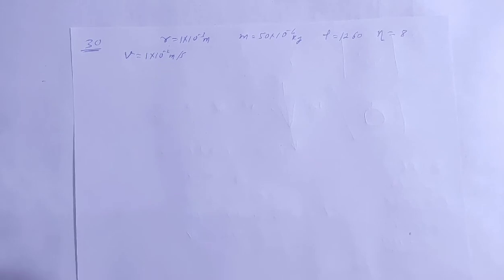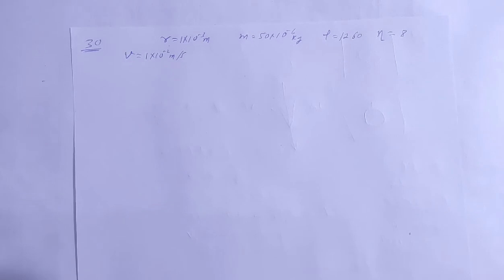A metal sphere of radius 1 mm falls vertically in glycerin. Find: (1) the viscous force exerted by the glycerin on the sphere when the speed is 1 cm per second, (2) the hydrostatic force exerted by the glycerin on the sphere, and (3) the terminal velocity with which the sphere moves down without acceleration.